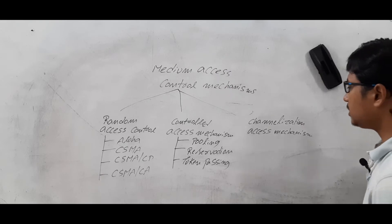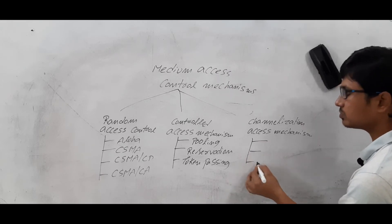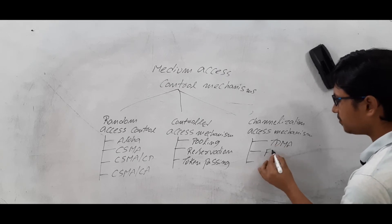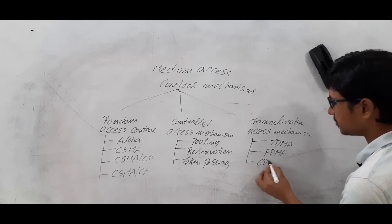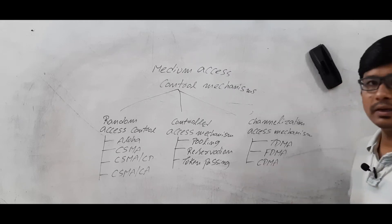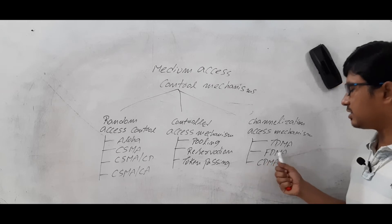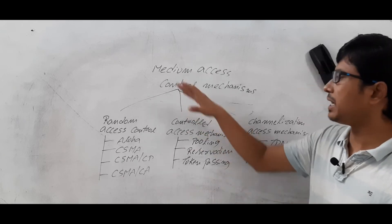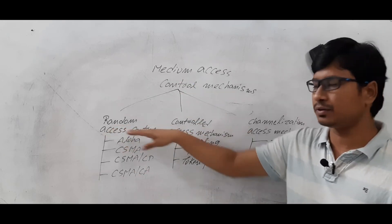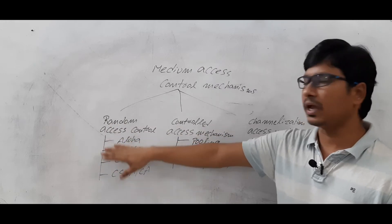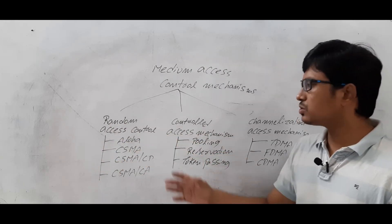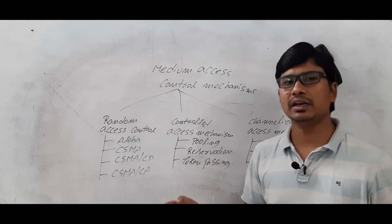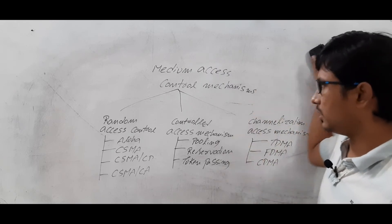Coming to the channelization access mechanisms, we have TDMA — time division multiple access, FDMA — frequency division multiple access, and CDMA — code division multiple access. So I hope you have understood that medium access control mechanisms are classified into three types with several mechanisms in each category. Now let me discuss ALOHA, which is classified into pure ALOHA and slotted ALOHA.